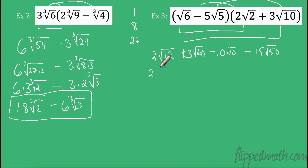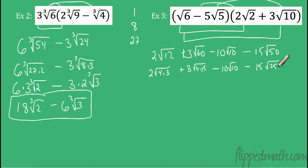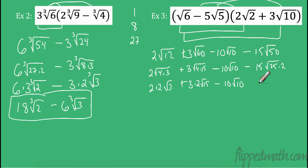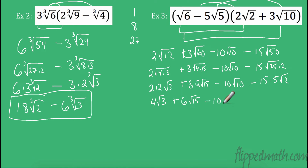Negative 5 times 3 is negative 15, and 5 times 10 gives radical 50. Now we have to simplify. 12 is 4 times 3 — 4 is a perfect square, so we take that out. 60 is 4 times 15 — 4 is a perfect square. 10 has no perfect square, so I leave that as 10 radical 10. And 50 is 25 times 2. The square root of 4 is 2, so we get 2 times 2 radical 3. For the 60 term, 3 times 2 radical 15. Then 15 times 5 radical 2, giving us 4 radical 3, 6 radical 15, minus 10 radical 10, minus 75 radical 2.